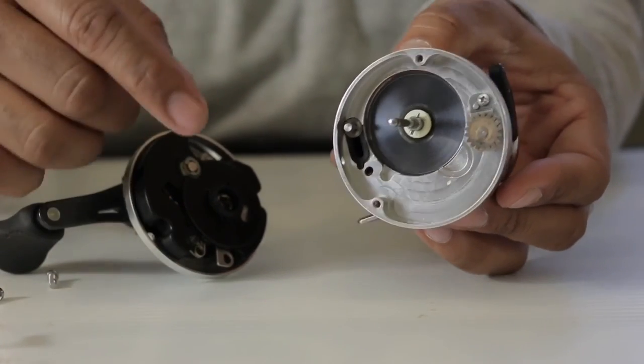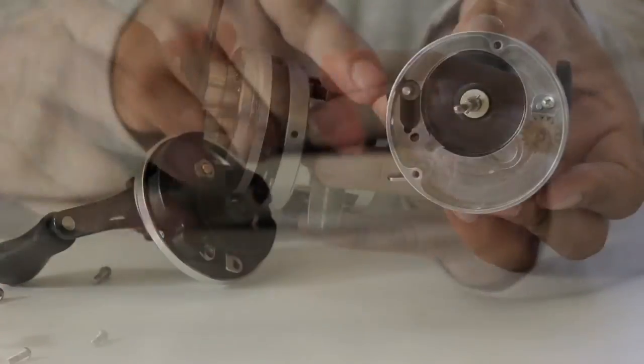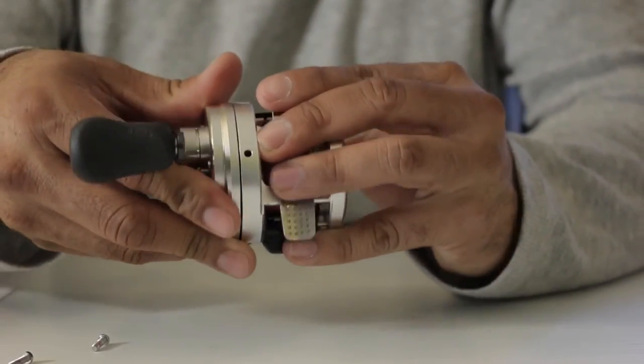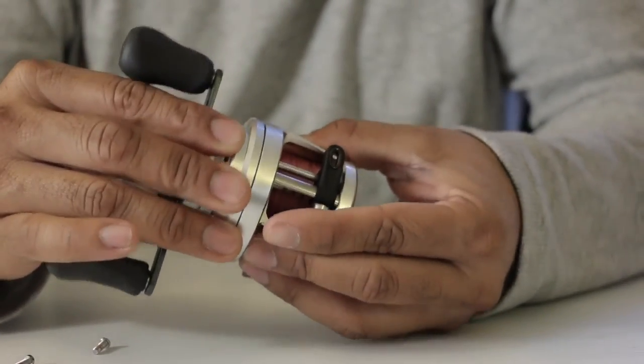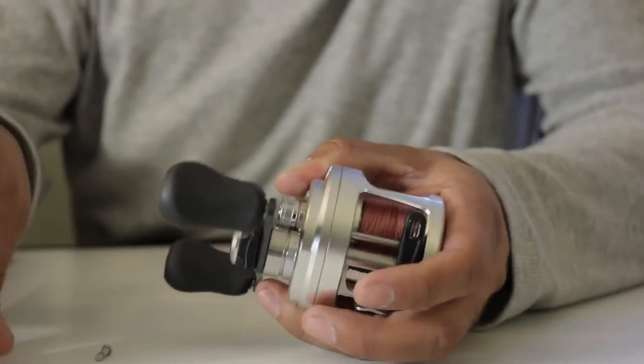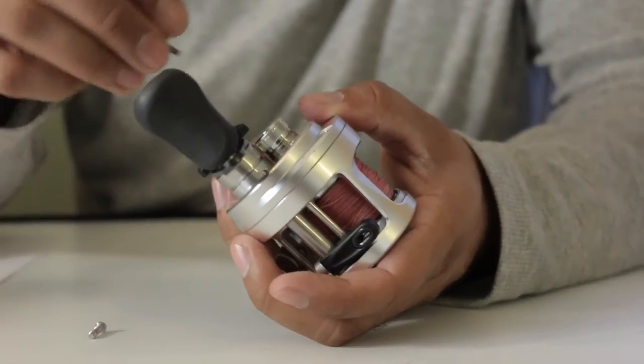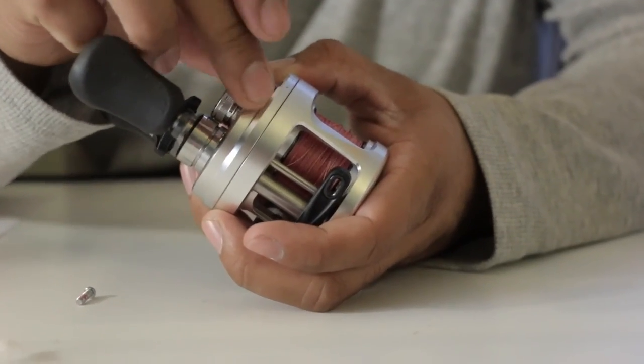Because if it's down and you try to put this part back on, then the clutch system won't engage. So you want to keep it in the up position and put your screws back in.